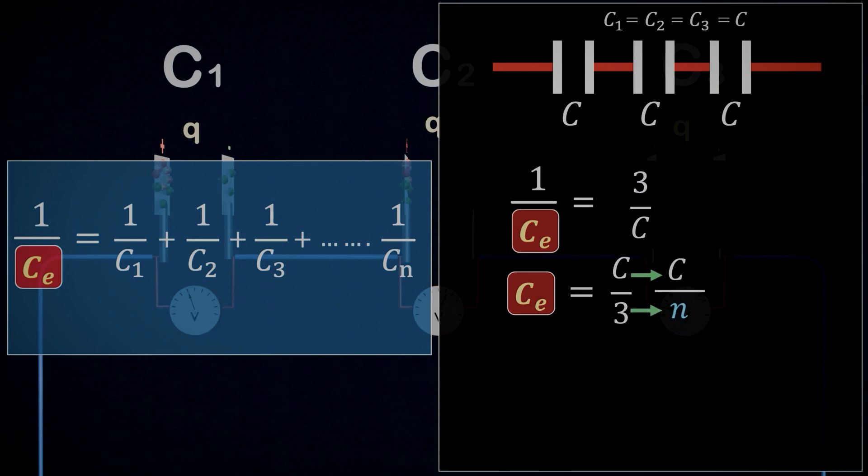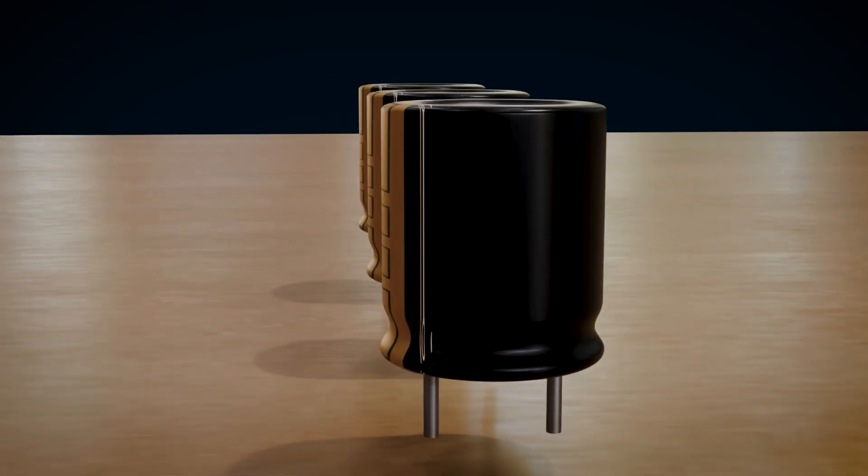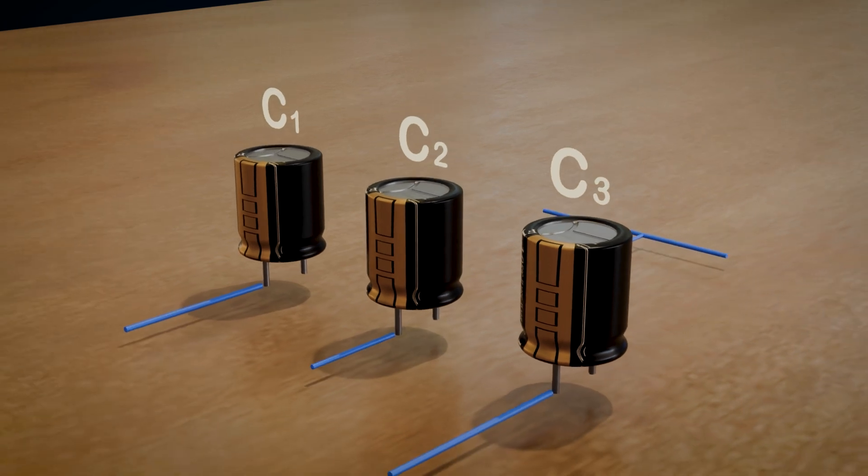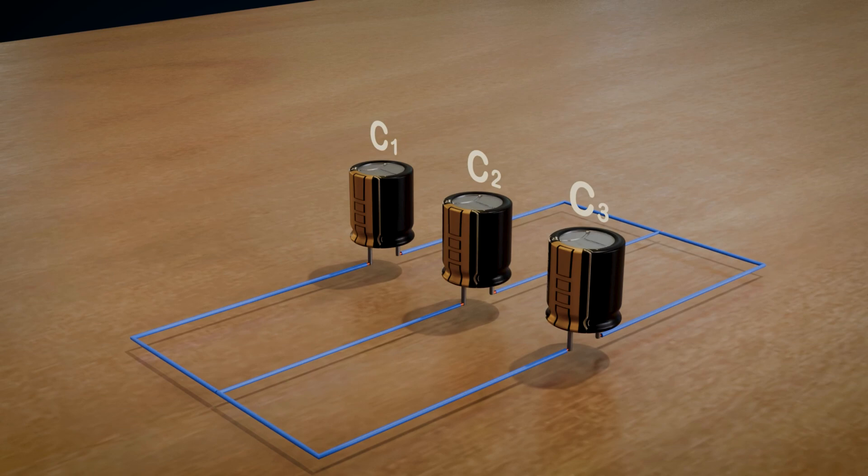All right, let's visualize how a parallel combination of capacitors works. Imagine we have three capacitors labeled C1, C2, and C3. Now, in a parallel setup, these capacitors are connected side by side, all joined together at one point.